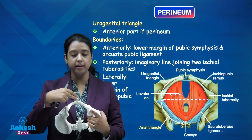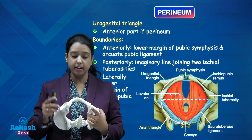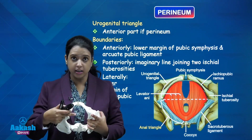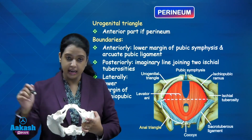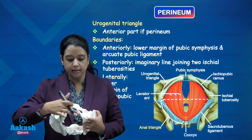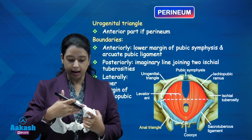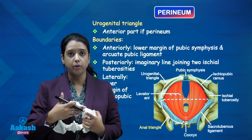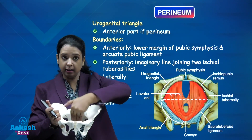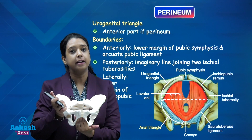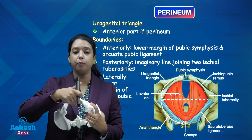We are mainly concerned with the anterior urogenital triangle. It is a triangular-shaped area. The boundaries of the urogenital triangle are: anteriorly, the pubic symphysis; posteriorly, an imaginary line connecting the two ischial tuberosities; and laterally, the ischiopubic rami. This is the triangular area of the anterior urogenital triangle. Posterior to it is the anal triangle. This anterior urogenital triangle is supported by the urogenital diaphragm.